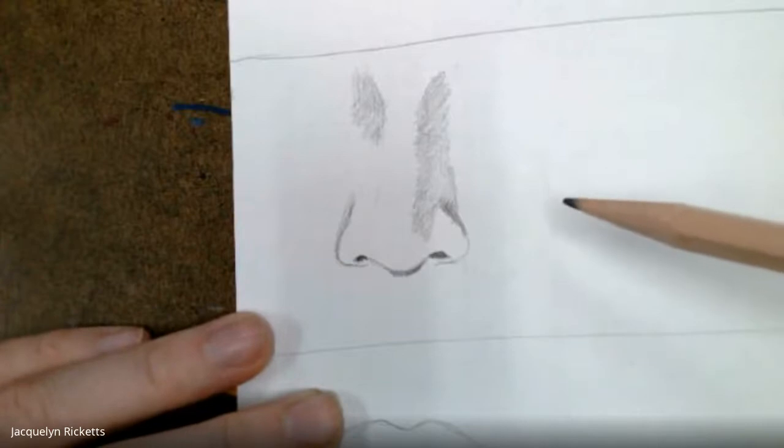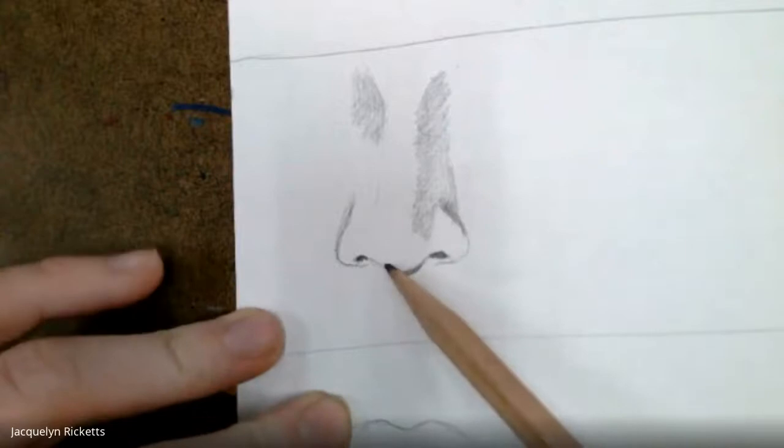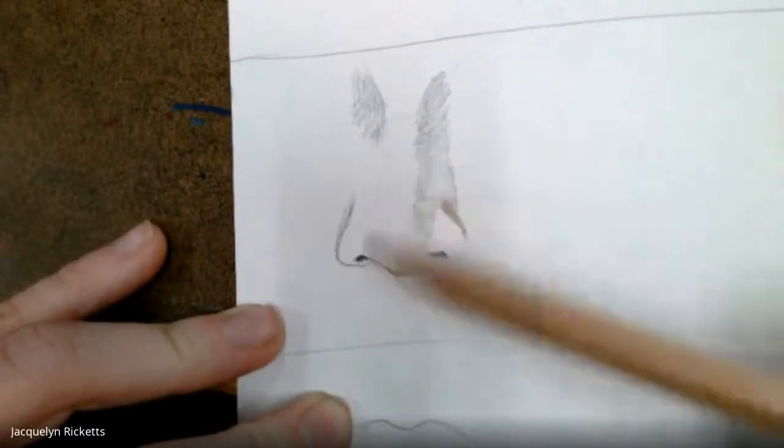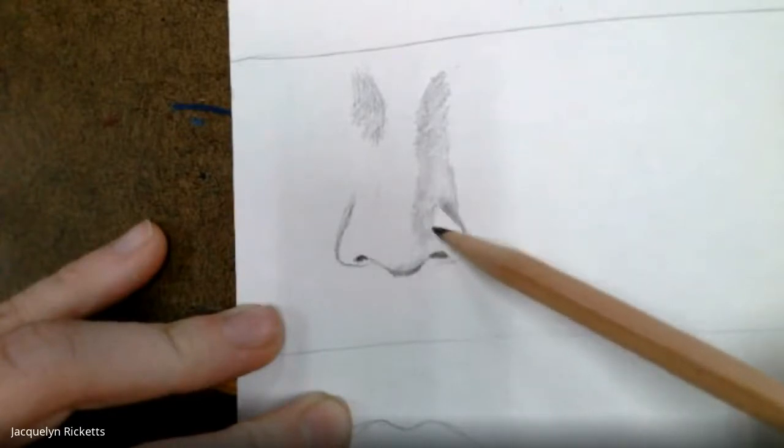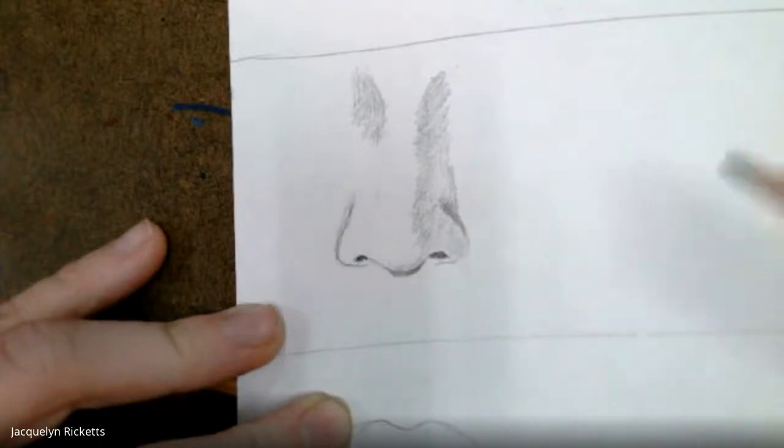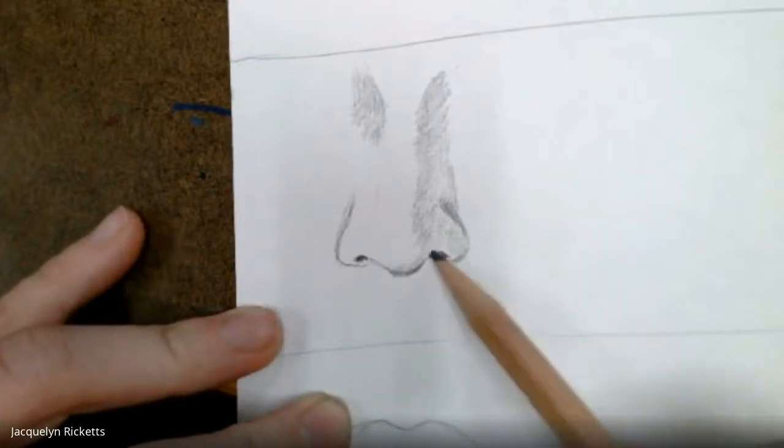Now I'm going to focus in on this area. A lot of this is learning how to control how hard you press on your pencil. I'm going in, there's no highlights in this area so I'm shading all of that. I'm going to darken this area here because I forgot that there was a shadow right about here.